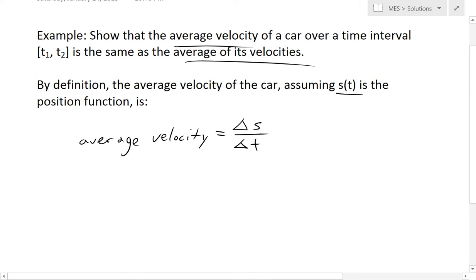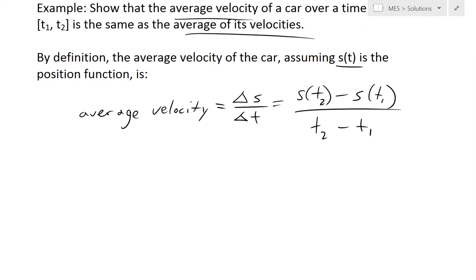So the change in displacement or position divided by the change in time. So this is the overall change in time and change in position, which is the average velocity. And this equals s(t2), so the position at time 2 minus s(t1) or the position at time 1 divided by the difference in time, so t2 minus t1. So this is the average velocity definition.